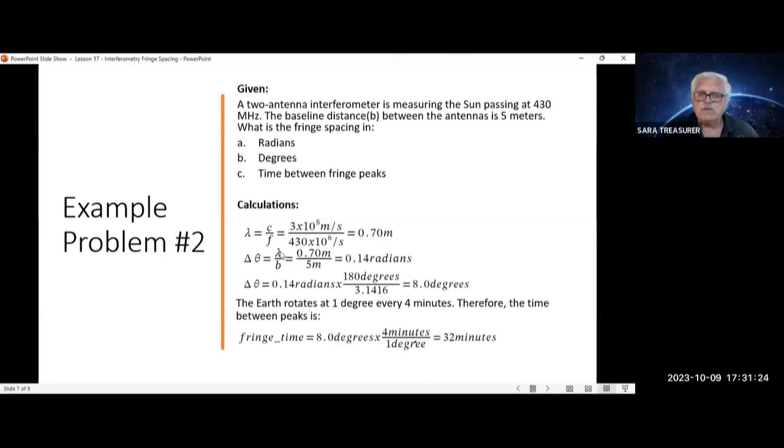Fringe spacing in radians is lambda over B. That's equal to 0.7 meters over 5 meters, which gives you 0.14 radians. Converting that to degrees, you multiply that times 180 over pi. That equals 8 degrees. And converting that to minutes with a drift scan, that'll give you 8 degrees times 4 minutes over 1 degree, which equals 32 minutes between all those peaks.